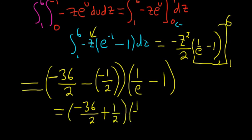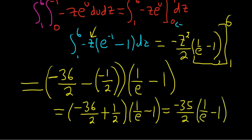So this is going to be negative 35 over 2. And then times 1 over e minus 1. And that should be the final answer. Kind of a long problem. So I hope that helped. That's it.